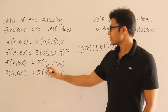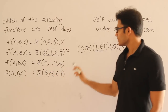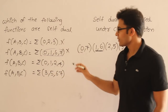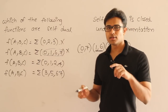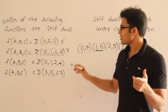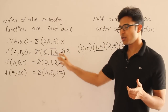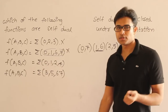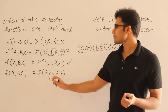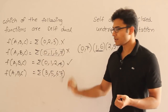Looking at the third option — minterms {0, 1, 2, 4} — yes, it is perfect. It is a neutral function because minterms equal maxterms, and along with that, we don't have any mutually exclusive terms both present. Therefore it is self-dual.